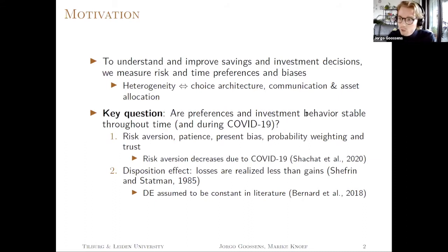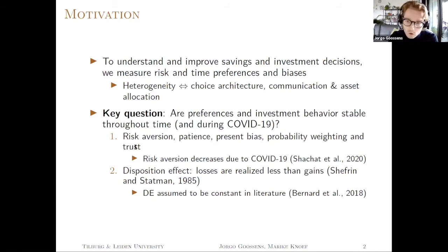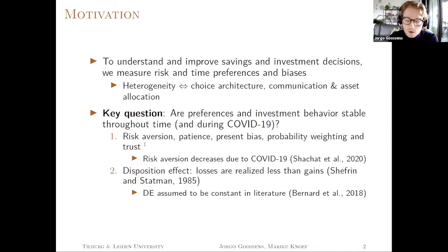So we changed our question, and now our key question is: are preferences, choices, and investment behavior stable throughout time? The first thing we do is measure five preferences: risk aversion, patience, present bias, probability weighting, and trust — specifically trust in insurance companies. We also know something about these preferences from the literature.